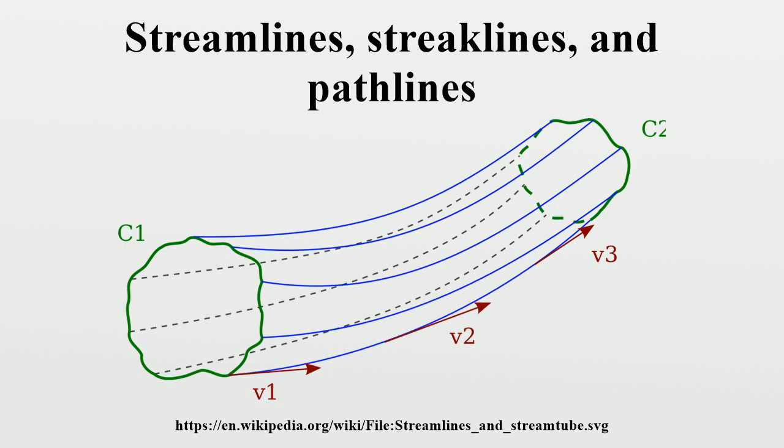Similarly, streaklines cannot intersect themselves or other streaklines, because two particles cannot be present at the same location at the same instant of time, unless the origin point of one of the streaklines also belongs to the streakline of the other origin point.